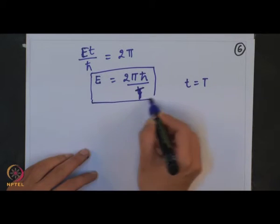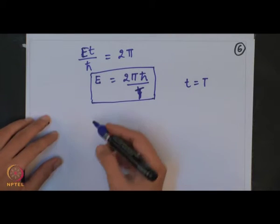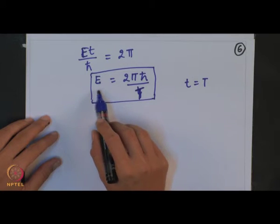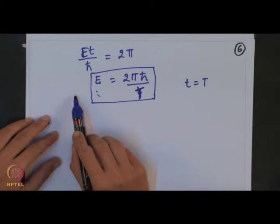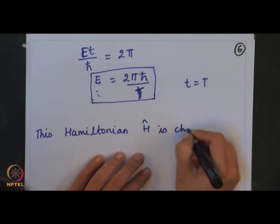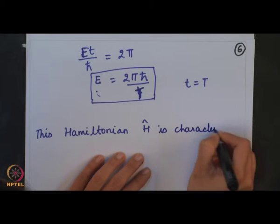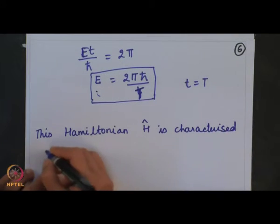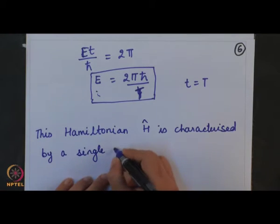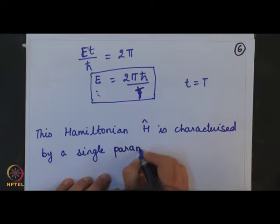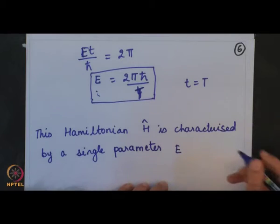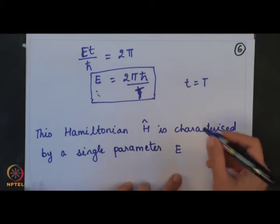At some time T we have ET/ℏ = 2π, giving the relation between E and time T. So we have here the single parameter which relates the energy to T, and this Hamiltonian is characterized by a single parameter E which gives the above relation.